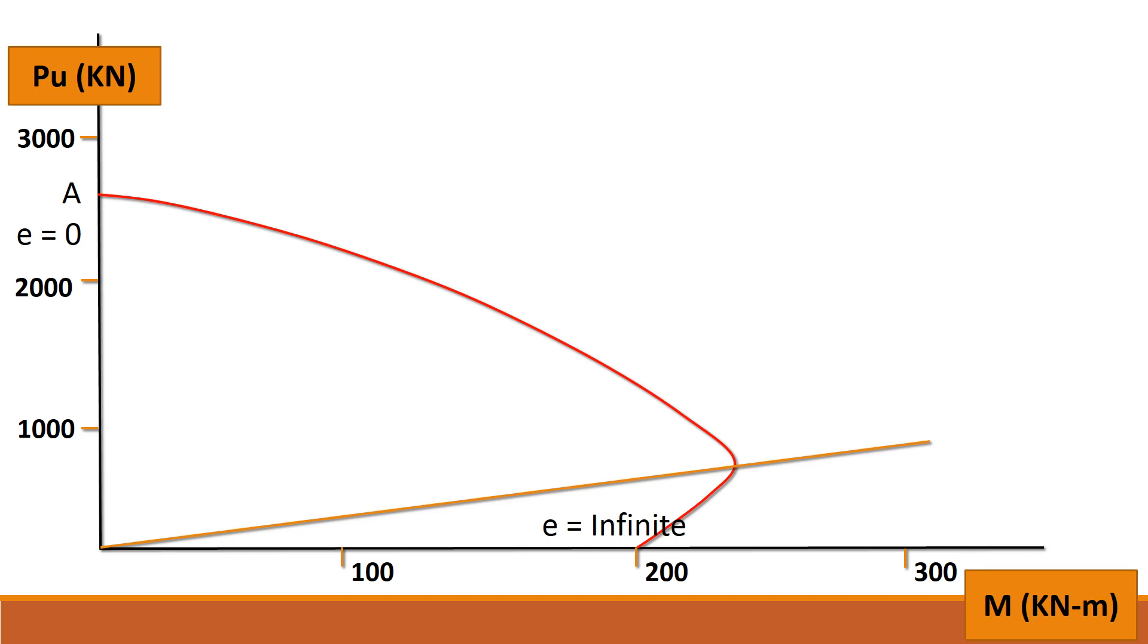The P-M interaction curve is determined for each column. The idea is to determine the variation of ultimate load PU with respect to the ultimate moment MU. For a balanced section, the area of steel under tension would be equal to the area of concrete under compression.